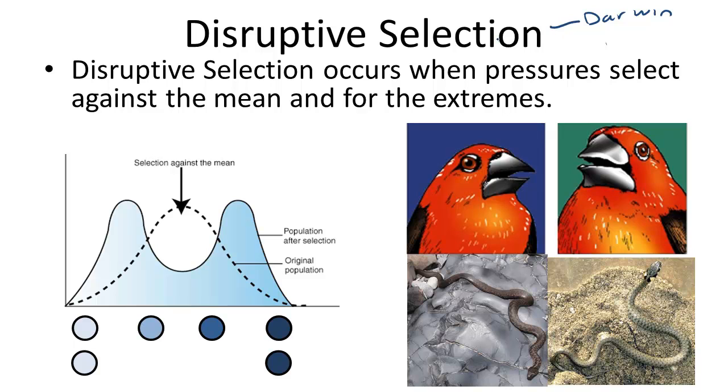Darwin did not come up with the theory of disruptive selection, but rather his theories led to the development of three different types of natural selection: one disruptive, another directional which we talk about in another video, and another called stabilizing. And these are pretty easy to remember.